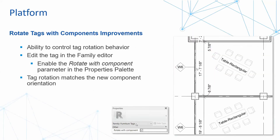Another nice change is the ability to do rotation tags with components in the Revit environment — not just for MEP, but for architectural, structural, steel, precast, and so forth. You can now control rotation tag behavior, but keep in mind you have to do this in the family settings itself. When you open up the tag, make sure that you enable the 'Rotation with Component' parameter. Then when you tag an item, you can rotate around the tag going forward.